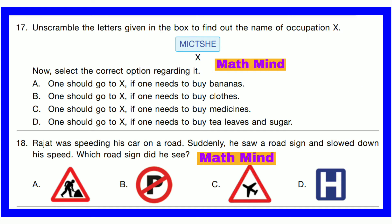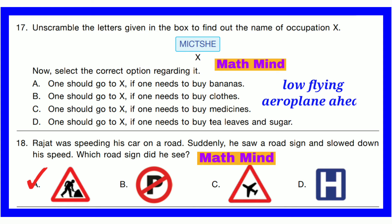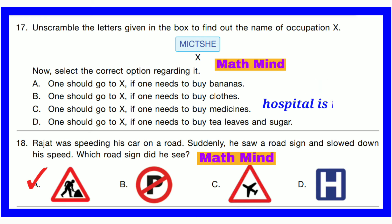Question number 18. Rajat was speeding his car on a road. Suddenly he saw a road sign and slowed down his speed. Which road sign did he see? Option A is correct — it says road work. So Rajat should slow down his car when there is road work. Option B says no parking. Option C says low flying aeroplane ahead. Option D says hospital is nearby.